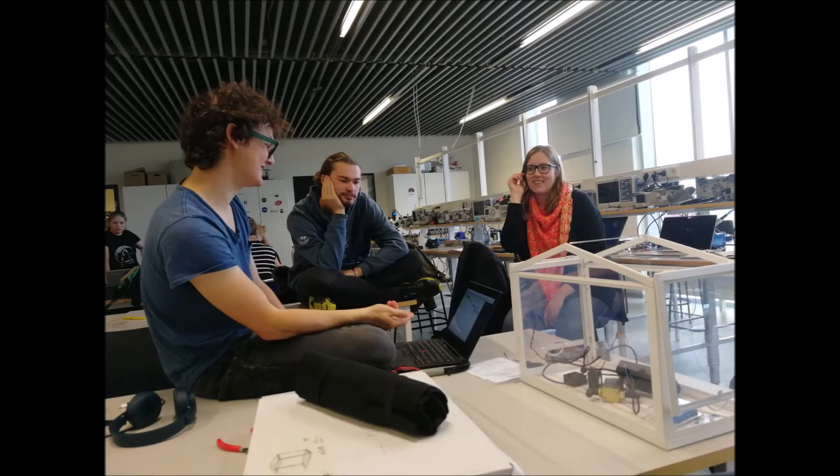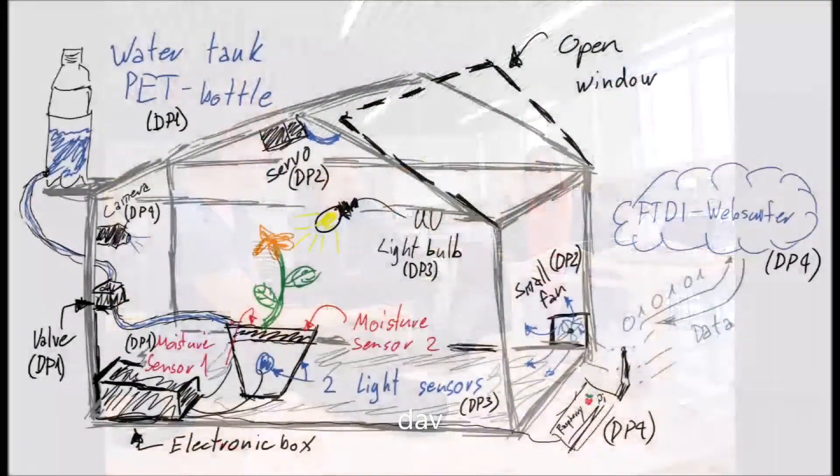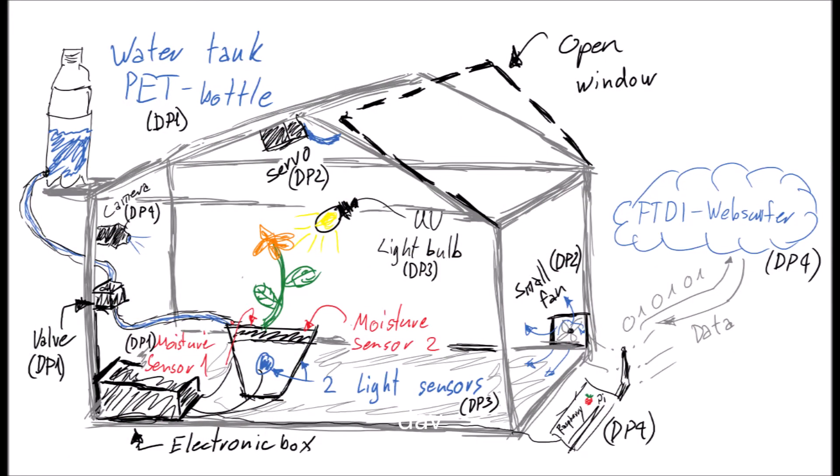Customers want to have optimal temperature, lighting, and irrigation for their plants. They want to be able to control and adjust the system to their needs and see information about conditions and undertaking actions.